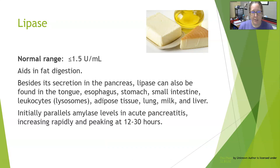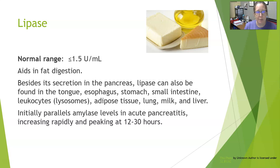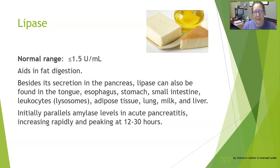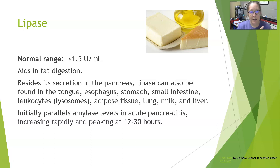Lipase has a normal range of less than 1.5 international units per liter. Its role in the body is to help with fat digestion. Lipase can also be secreted in the tongue, esophagus, stomach, small intestine, leukocytes, adipose tissues, lung, milk, and liver — it is found all over the place.